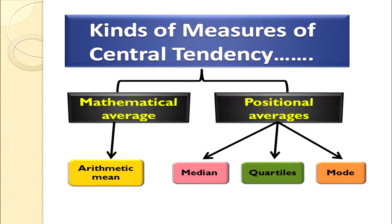There are two kinds of measures of central tendency. One is mathematical average and the other is positional average. In mathematical average, we compute arithmetic mean. In positional averages, we calculate median, quartiles, and mode. Today our class will focus on arithmetic mean — how we compute it in case of individual series, discrete series, and continuous series.